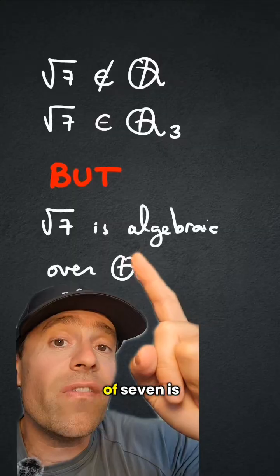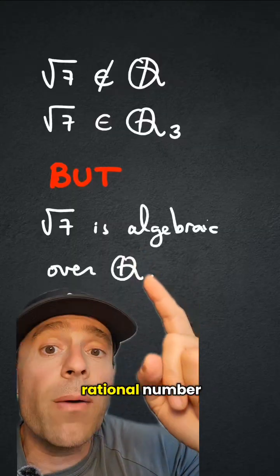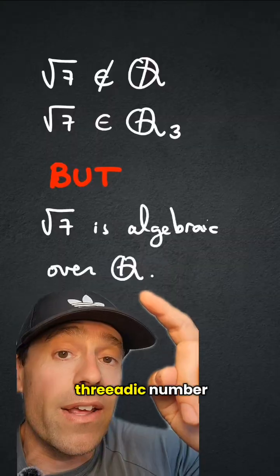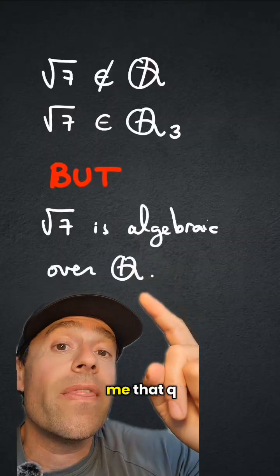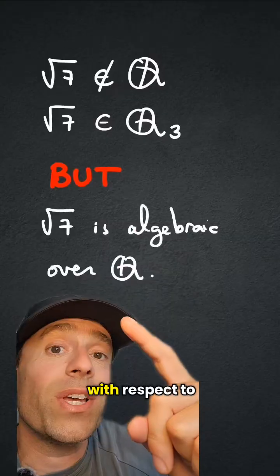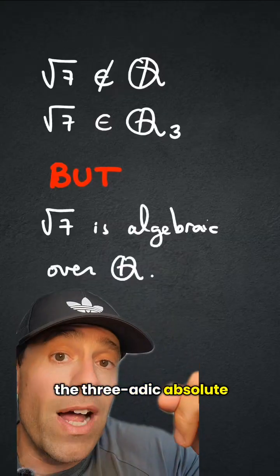So in this case, square root of 7 is clearly not a rational number, square root of 7 is a triadic number, so that tells me that Q is not complete with respect to the triadic absolute value.